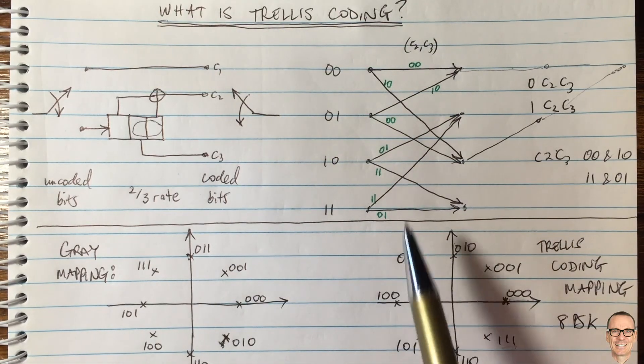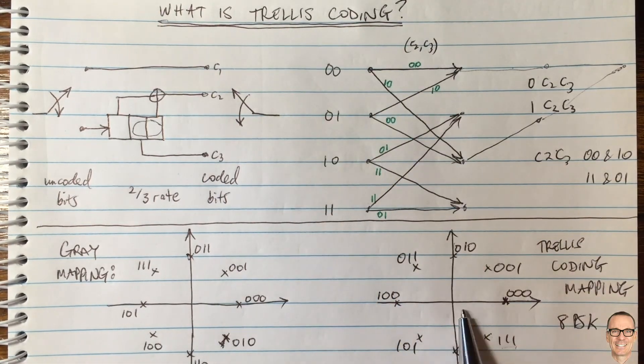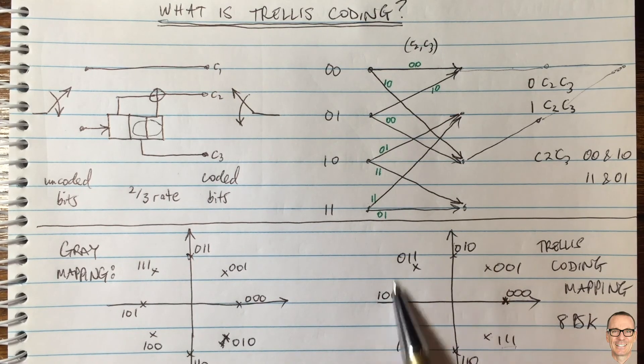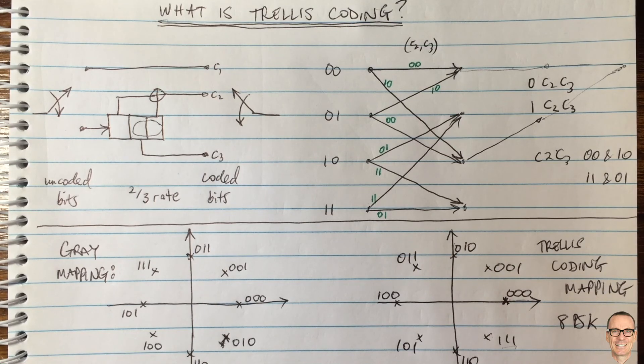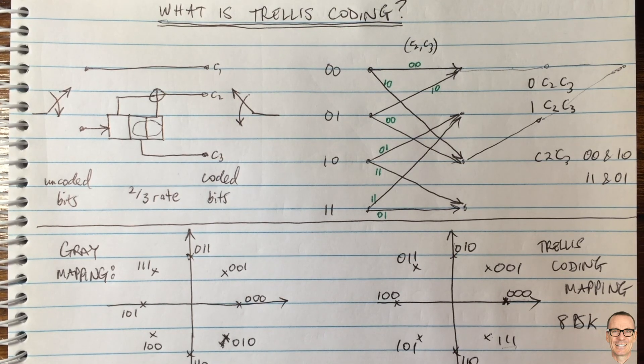In some ways, it should be called trellis decoding because the key is in the way you go about doing the decoding and the mapping to the constellation points. So don't forget if you found this video helpful to like the video. It helps others to find it and subscribe to the channel for more videos and check the list below for links to related videos. And I'll see you guys.